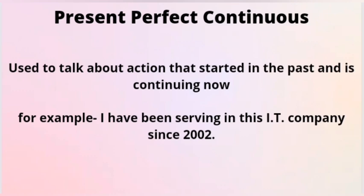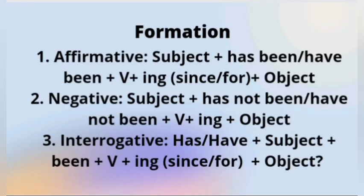Present perfect continuous is used to talk about an action that started in the past but is still going on — for example, I have been serving in this IT company since 2002, meaning the person is still serving. For the formation: if affirmative, begin with subject, has been or have been, verb plus -ing, since or for, object. If negative: subject, has not been or have not been, verb plus -ing, since or for, object.